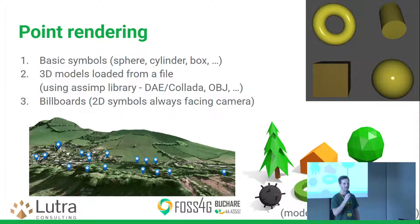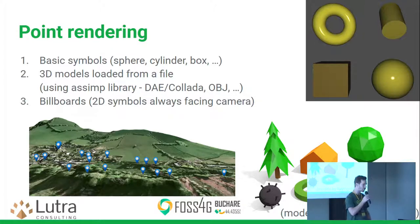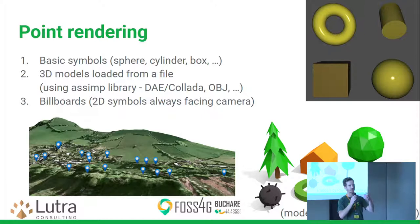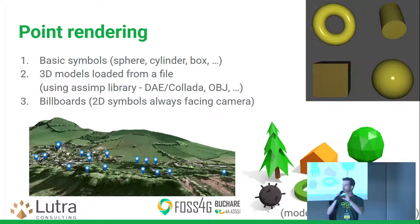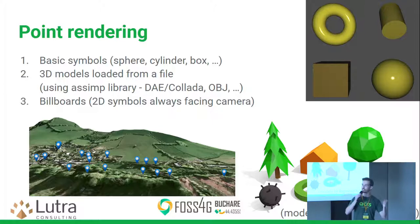We also have some 3D models from the community that are included with QGIS. If you have suggestions for what 3D models you'd like, you can talk to Raymond. Most recently, we also have support for so-called billboards — if you want to use 2D markers shown in the 3D scene, these are special entities that always face the camera as you move the map around. That's one of the new features from the Summer of Code project.